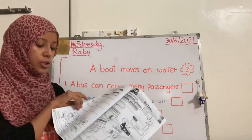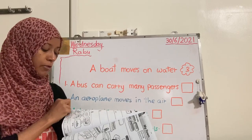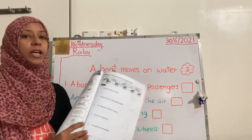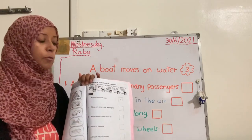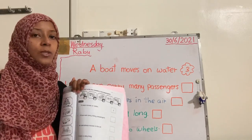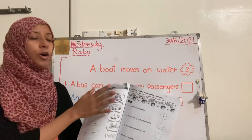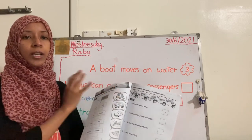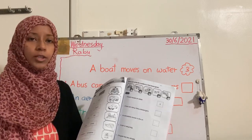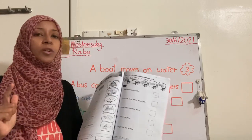Open page number 49. We will continue our lessons. Last week we learned about transport. Do you remember the different types of transport? We have three types: air transport, water transport,